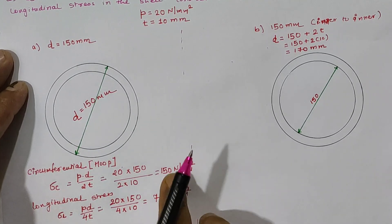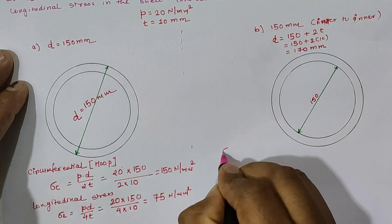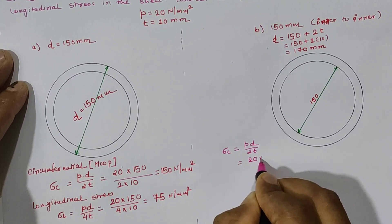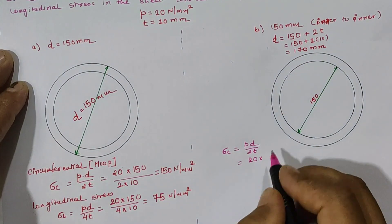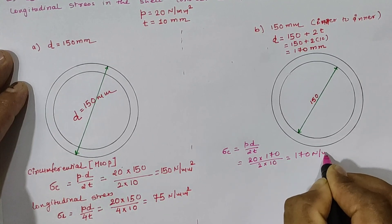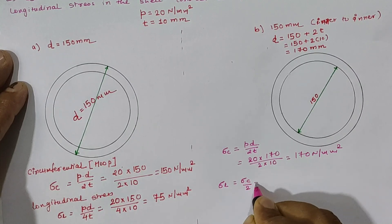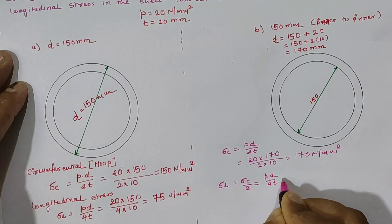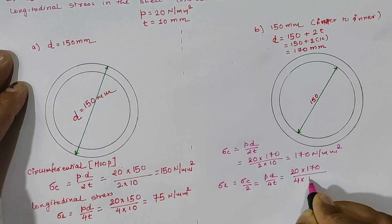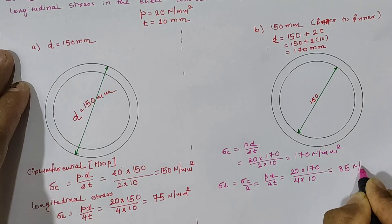For Case 2, d = 170 mm. Circumferential stress σc = Pd / 2t = 20 × 170 / (2 × 10) = 170 N/mm². Longitudinal stress σL = σc / 2 = Pd / 4t = 20 × 170 / (4 × 10) = 85 N/mm².